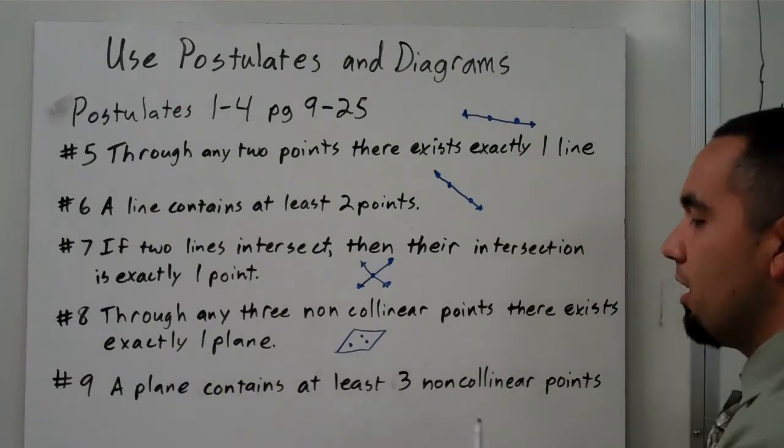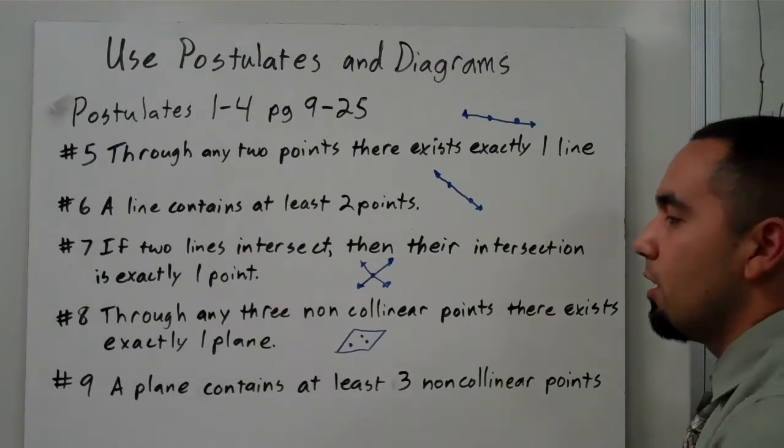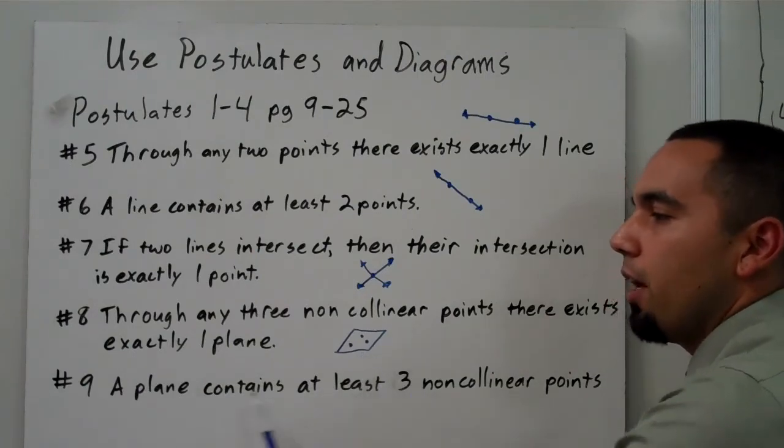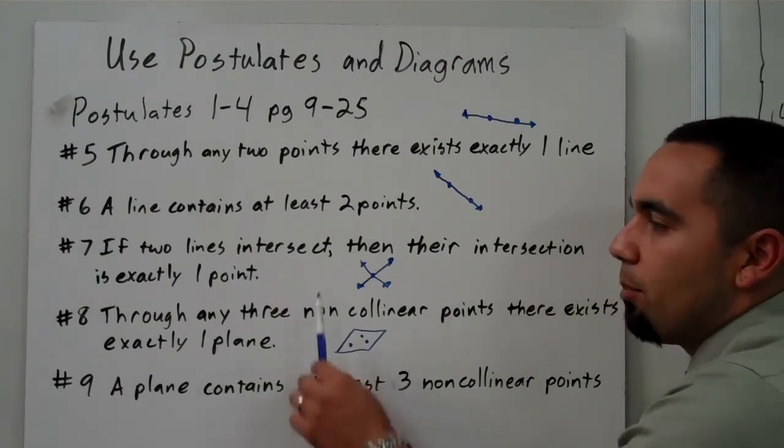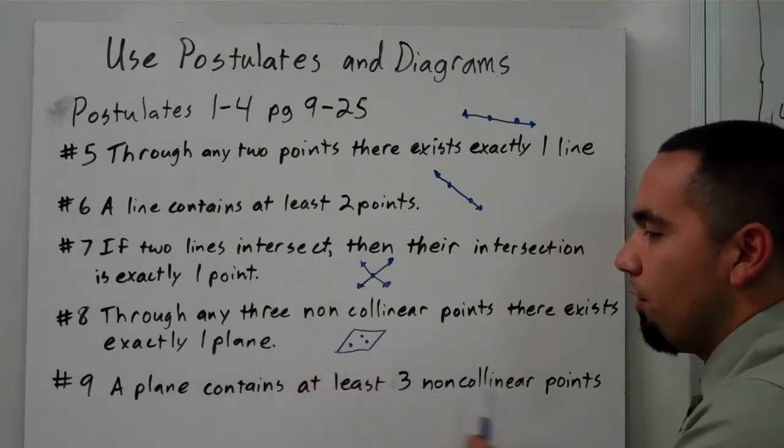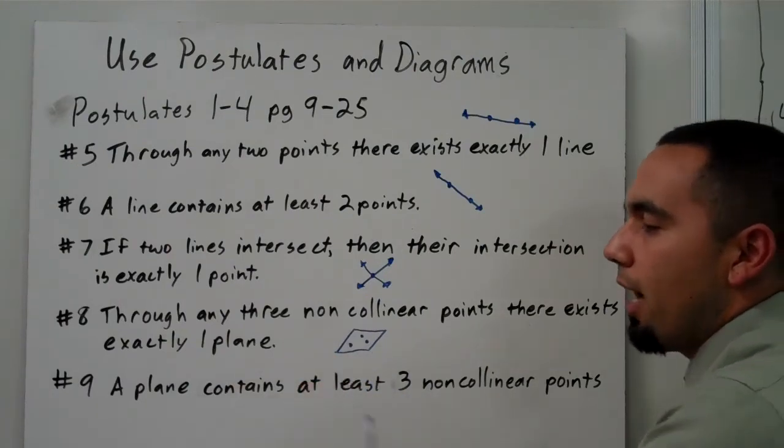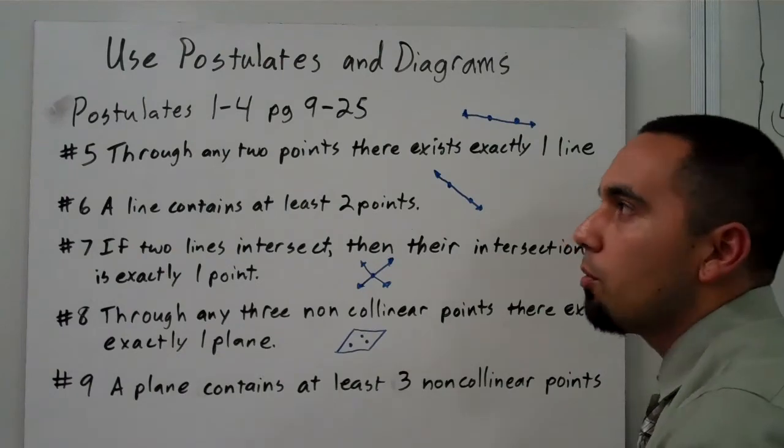Number 9 says a plane contains at least three non-collinear points, and the same exact drawing we can use for that. If we have three non-collinear points, there has to be one plane that contains all three.